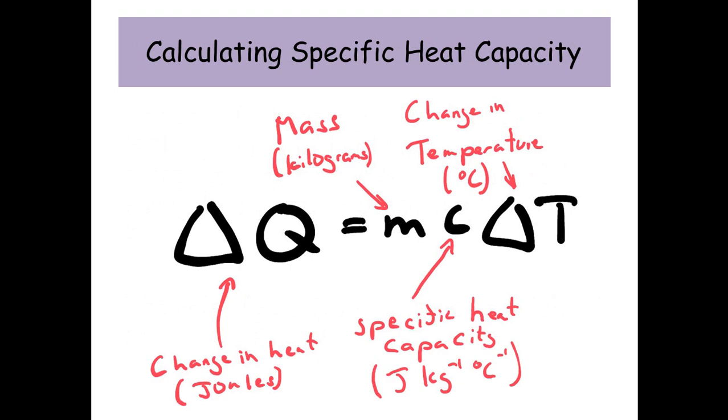C is the specific heat capacity, measured in joules per kilogram per degree. Finally, delta T is the change in temperature. Remember, a change in temperature is the final temperature minus the initial temperature.